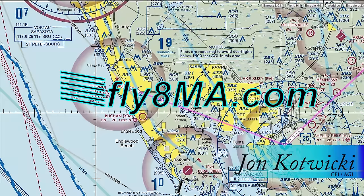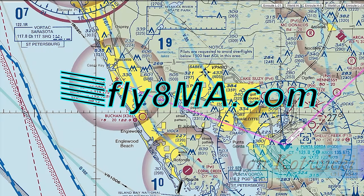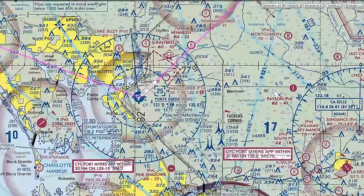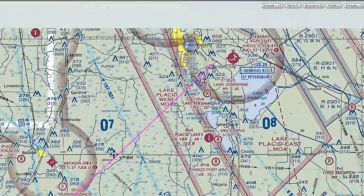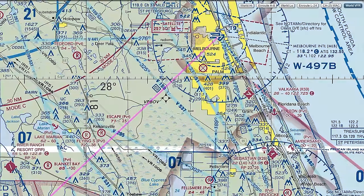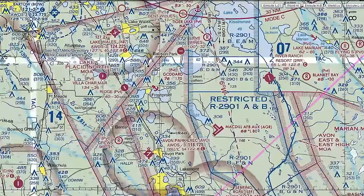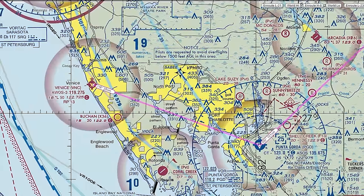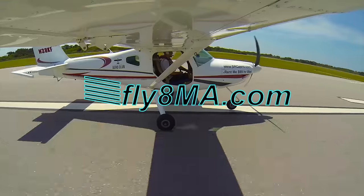Hey guys, John from FlightMikeAlpha.com. Today we're going to be looking at a pretend flight we planned from Venice to Punta Gorda to the Melbourne Airport. We're going from a non-towered airport to a towered Class D airport, and on up to Melbourne Airport, another Class D airport. We're going to look at the sectional chart and all of the applicable things to our route of flight.